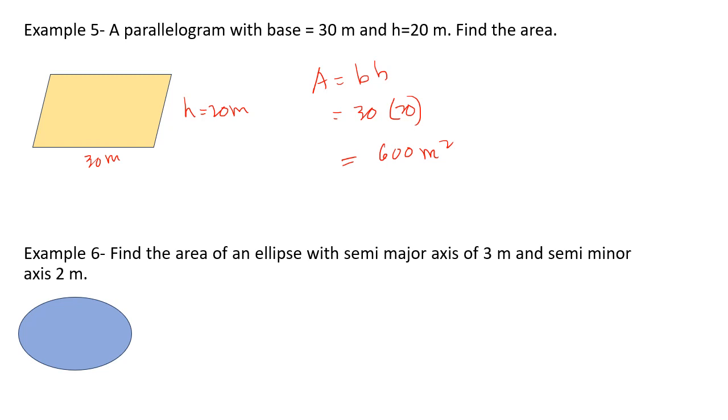Example 6: Find the area of an ellipse with semi-major axis of 3 meters and semi-minor axis of 2 meters. Area equals pi times a times b, equals pi times 3 times 2, equals 3.14 times 6, equals 18.84 meters squared.